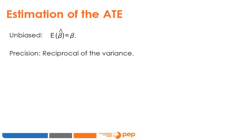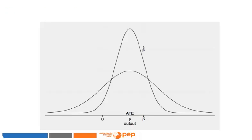If the expected value of the ATE equals the true treatment effect, then the ATE is unbiased. Although bias is a property of estimators and not estimates, we often refer to the estimate generated by an unbiased estimator as an unbiased estimate. When analyzing empirical evidence, the aim is not only to use unbiased estimators but also to obtain precise results. Precision is the reciprocal of the variance: if an estimator has a large variance, it is very imprecise and there is great uncertainty about how close we are to the true treatment effect.